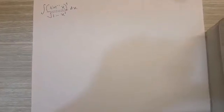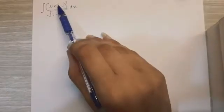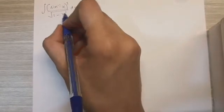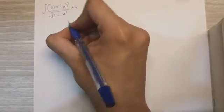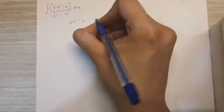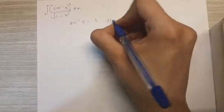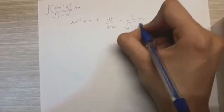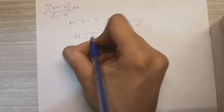Here we can clearly see that we have sin inverse x and its differentiation which is 1 upon root 1 minus x squared in the denominator. So if we keep sin inverse x as t, then dt by dx becomes 1 upon root 1 minus x squared. And dx becomes dt into root 1 minus x squared.